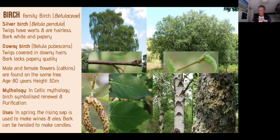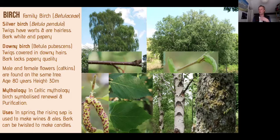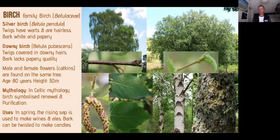Birches are a pioneer species — they don't live that long but grow quickly and are great for nursing other trees. They're hardy yet delicate. They have a very sweet sap with lots of sugar, similar to maple syrup — you can tap it and ferment it. The high oil content in the bark means it can be used as a skin for an open boat or canoe, or for roof shingles. Birch has a historical and mythical symbol of renewal and purification.